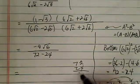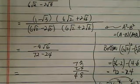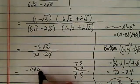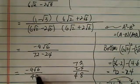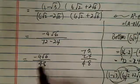72, 24, we have 48 over here. So, minus 4 radical 6 over 48. And there's a common factor of 4. Let's take care of that.